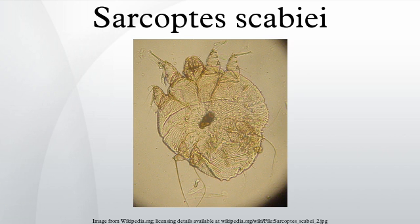The scabies mite Sarcoptes scabiei var. hominis goes through four stages in its life cycle: egg, larva, nymph, and adult. Upon infesting a human host, the adult female burrows into the stratum corneum, where she deposits two or three eggs per day. These oval eggs are 0.1–0.15 mm long and hatch as larvae in three to four days. A female can lay up to thirty eggs, then dies at the end of a burrow. Upon hatching, the six-legged larvae migrate to the skin surface and burrow into molting pouches, usually into hair follicles, where vesicles form. After three to four days, the larvae molt, turning into eight-legged nymphs. This form molts a second time into slightly larger nymphs, before a final molt into adult mites.